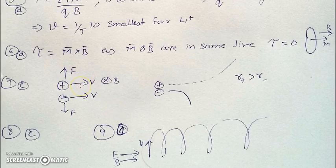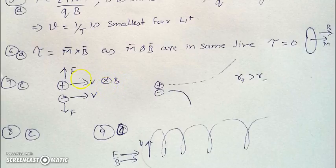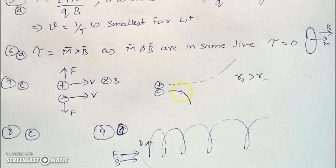An example is taken: suppose two charges, positive and negative, are moving with the same velocity under the same magnetic field B. The positive charge will experience a force upward and the negative charge will experience a force downward. The radius of curvature for the proton will be more as compared to the electron, since the mass of the electron is very much less than that of the proton.